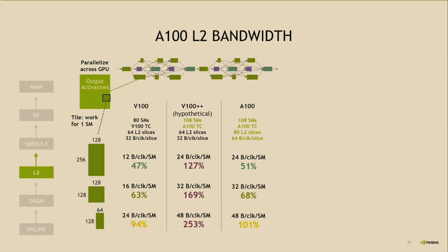Such a large increase in bandwidth is not optimal from an area or power perspective. We addressed this with a major innovation: restructuring the L2 into split partitions with a hierarchical crossbar structure. Each partition of the L2 cache contains data nearer to the SM based on the access pattern, reducing distance traveled by an L2 hit. Hardware cache coherence maintains the CUDA programming model across the full GPU, and applications automatically leverage the bandwidth and latency benefits of the new L2 cache.